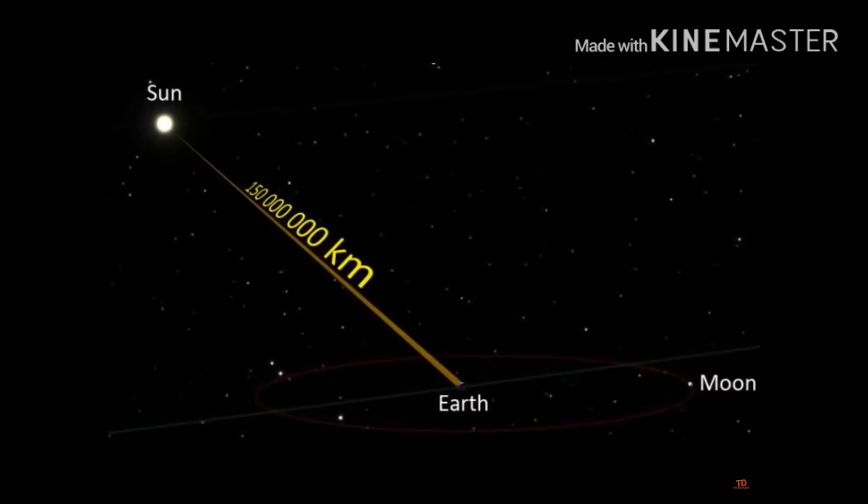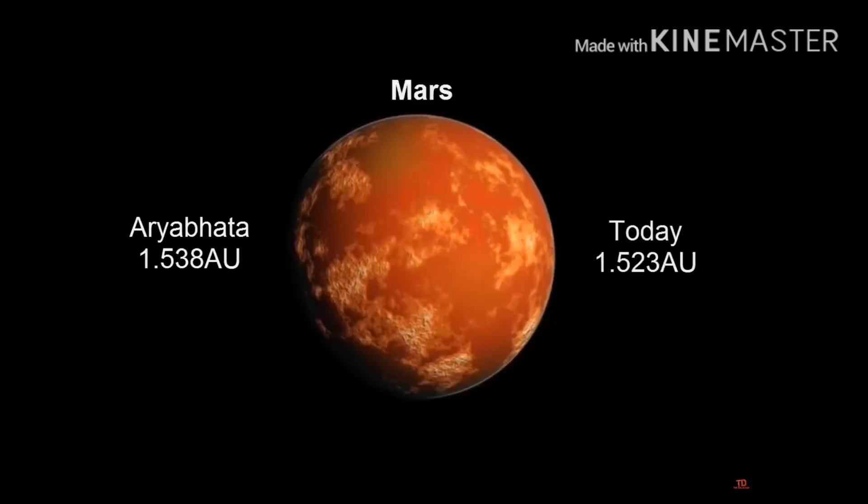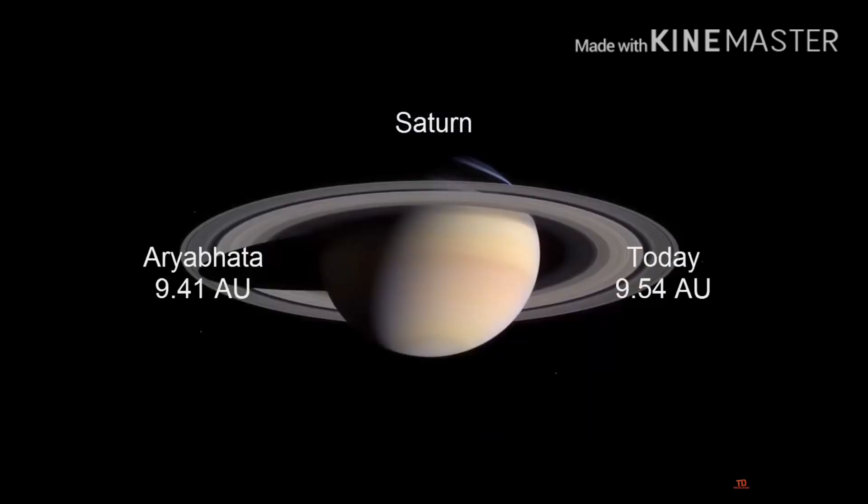This value is called one astronomical unit. And based on this distance he also calculated the distance of other planets from the sun which is almost perfectly matching with the present day calculations.